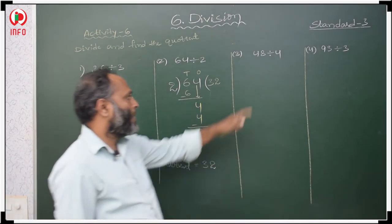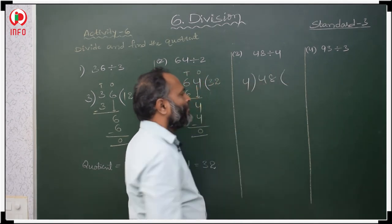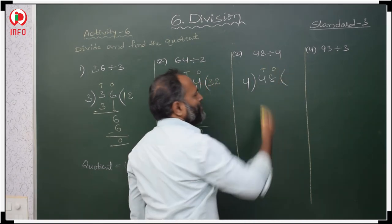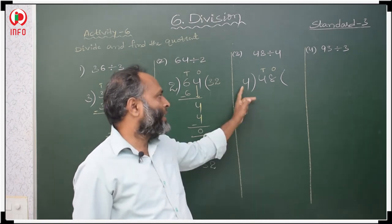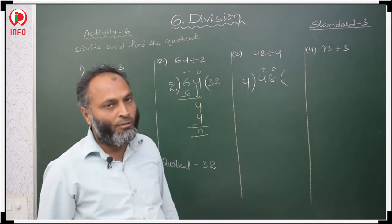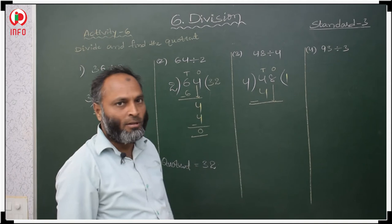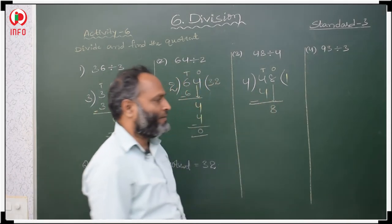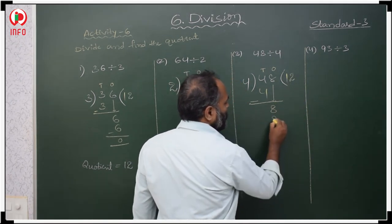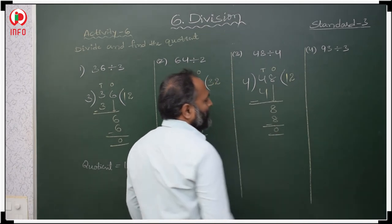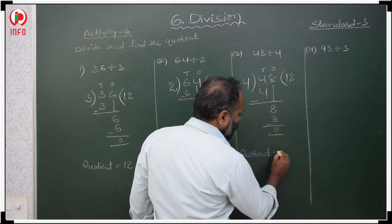Next: 48 divided by 4. 48 is the dividend, 4 is the divisor. This is in 1's place and 10's place. The extreme left digit 4 equals the divisor, so no need to take 48 at a time. 4 ones are 4 tens — write 1. Same number minus same number is 0. Copy 8 ones. 4 twos are 8 ones, so write 2. 8 minus 8 is 0. Quotient is 12.